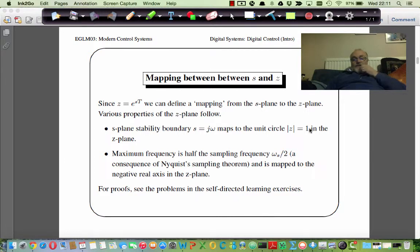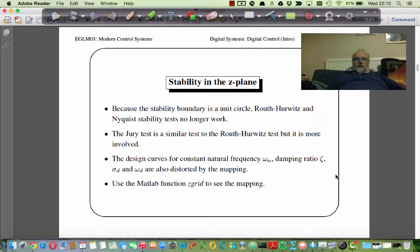So the stability boundary maps into unit circle, that's the first thing. Another thing that happens is that the maximum frequency in the Z-plane is half the sampling frequency. This is due to Nyquist sampling theorem. And that value here actually gets mapped onto the negative real axis in the Z-plane. And there are other distortions that happen through this mapping that are discussed in the exercises provided for this particular session. Because stability is a unit circle, we can't use Routh Hurwitz and Nyquist tests, because those no longer apply when dealing with a unit circle. There is a test called the jury test, but it's more involved to apply.